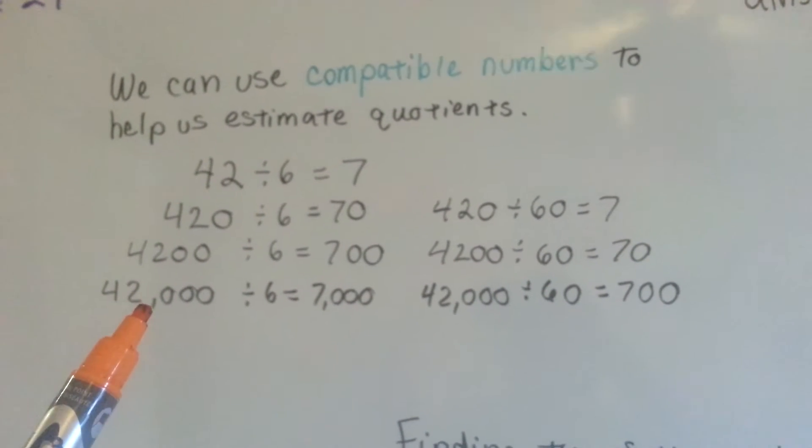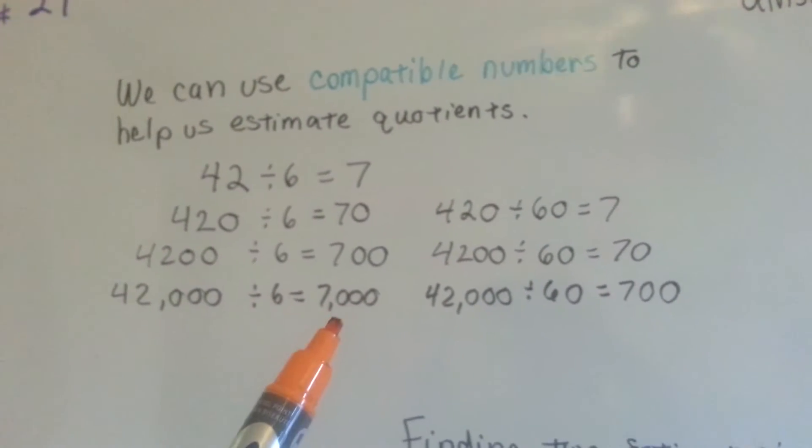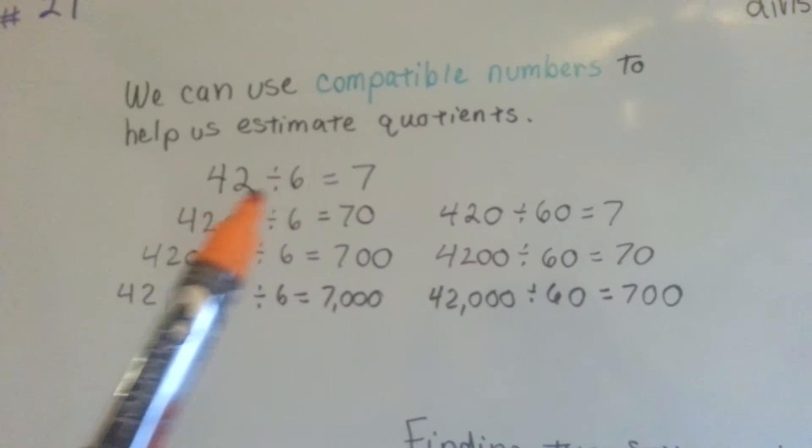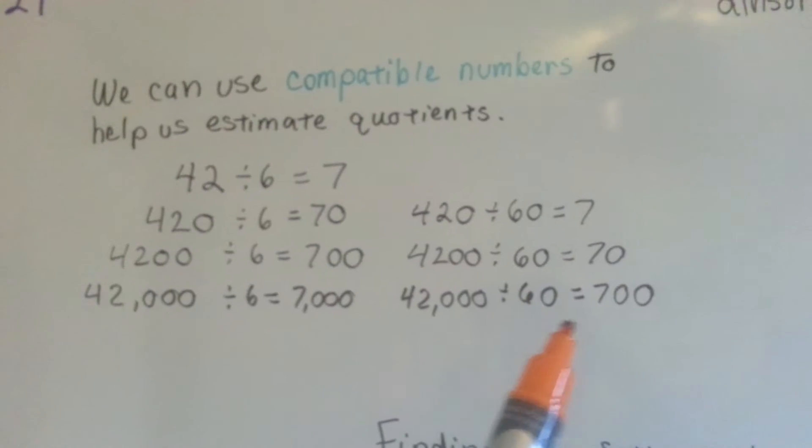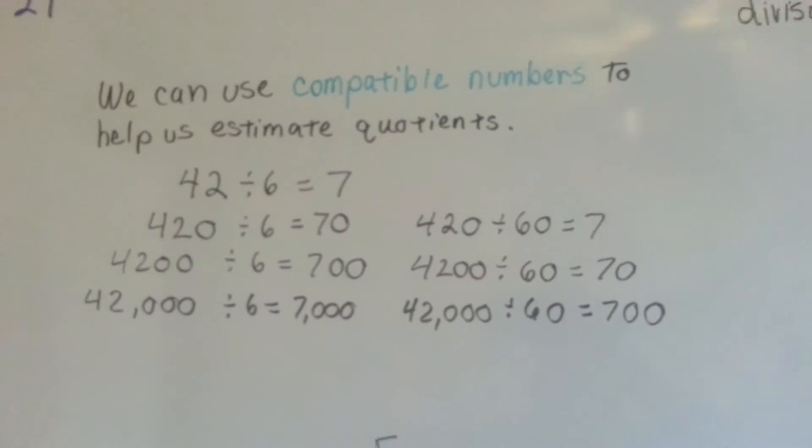Something as big as 42,000 divided by 6 would be 7,000 because we're using the compatible numbers. Or we could say 42,000 divided by 60 is 700. See how they helped?